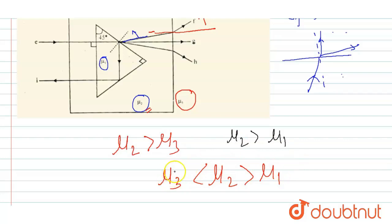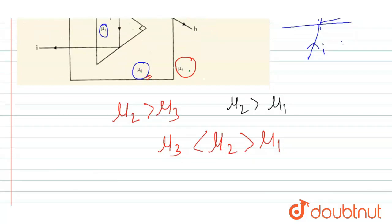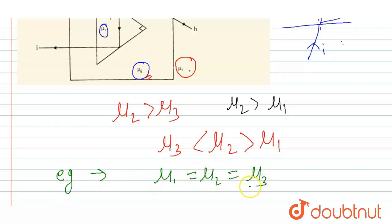Now taking path EG — this is a straight path with no deviation, meaning no refraction occurs. There are two conditions for no refraction: if the angle of incidence is 90 degrees, or if the surrounding media have the same refractive index. Since EG is straight with no deviation, I can say μ1 = μ2 = μ3.